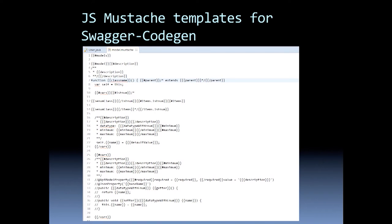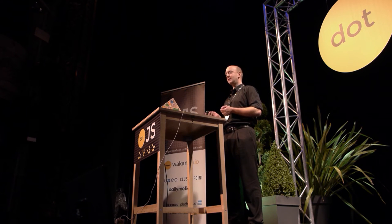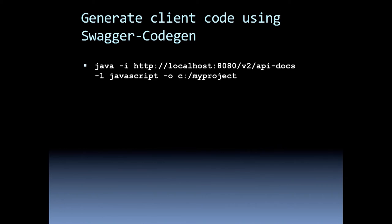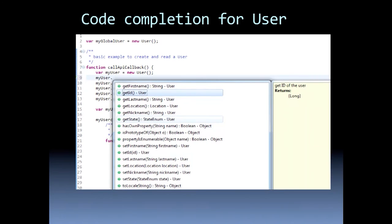These are the Mustache templates for Swagger CodeGen. They are simple text files, so you can easily customize them according to your requirements. This is how you generate client code using Swagger CodeGen — it's just a Java program you have to invoke. And this is what you get: the generated JavaScript model with the properties, data types, description, required indication, and getter/setter support on the model class. You get code completion for the model class, including JavaScript doc support with data type indicators.